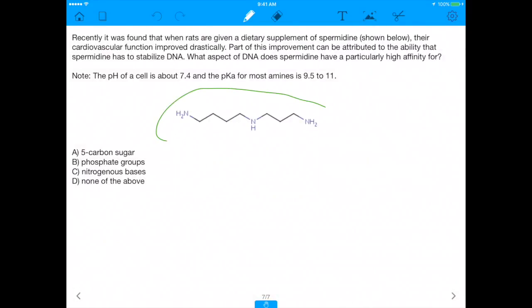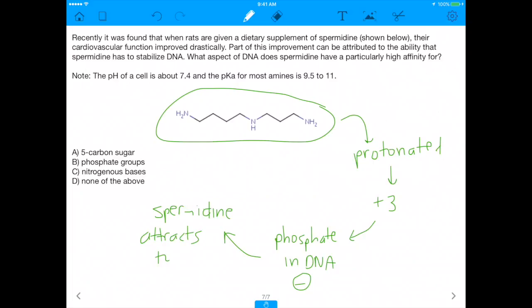And so when we go back to the original question, and it says, it gives us spermidine, and it asks us, where would it associate in DNA? You had to make the jump to know that this is going to be protonated. And once you found out this was protonated, you realized that this would have a charge of plus 3, and when you knew it had a charge of plus 3, you had to remember that phosphate groups in DNA are negatively charged. And once you made the link that phosphate is negatively charged, you should have been able to conclude that spermidine attracts to phosphate. And that's where it binds, and that's how it stabilizes this DNA. And therefore, the answer here is B.